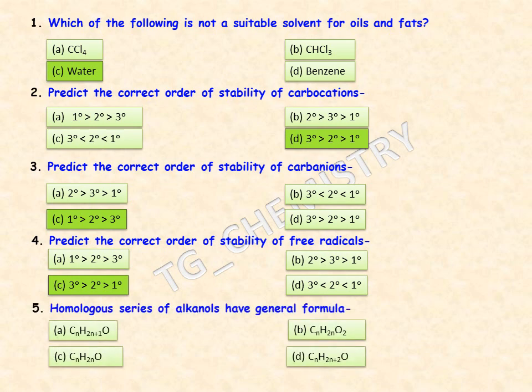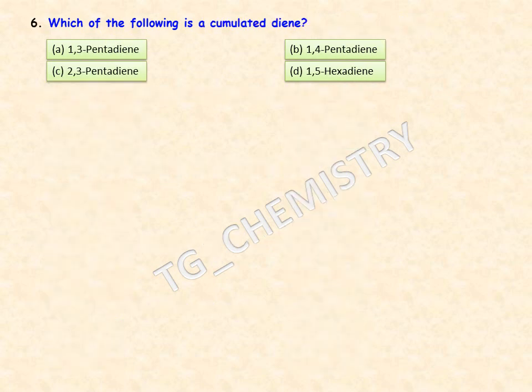Next: the homologous series of alkanols has the general formula. Alkanols are aliphatic alcohols, and the general formula is option D: CₙH₂ₙ₊₂O. As a simple example, ethyl alcohol has the formula C₂H₅OH, which fits CₙH₂ₙ₊₂O.